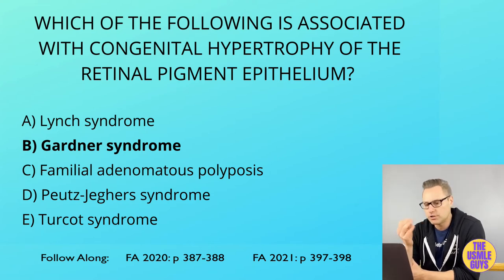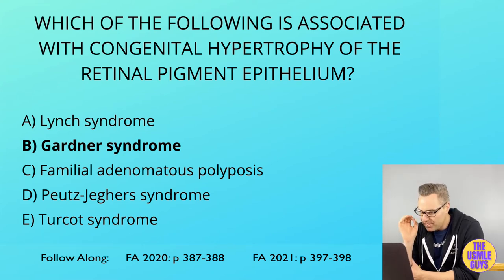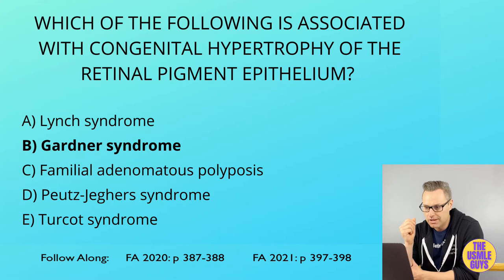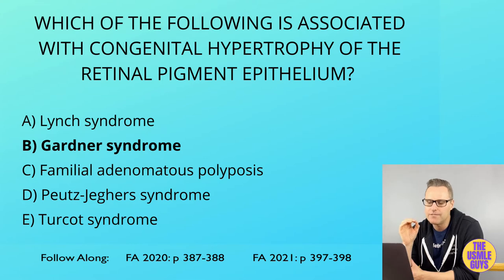Next up we have Gardner syndrome — another autosomal dominant inherited disorder caused by a mutation of the APC tumor suppressor gene. This is a form of FAP also characterized by bone and soft tissue tumors, congenital hypertrophy of the retinal pigment epithelium, and the unique finding of impacted and extra teeth.